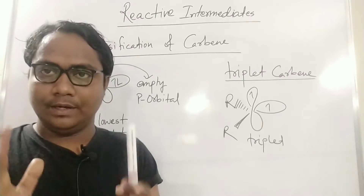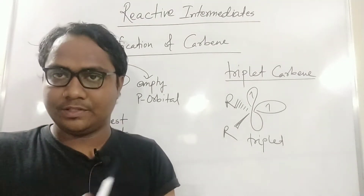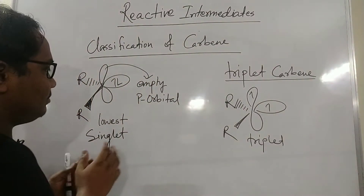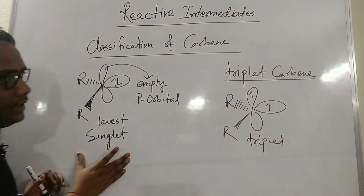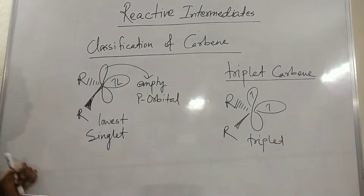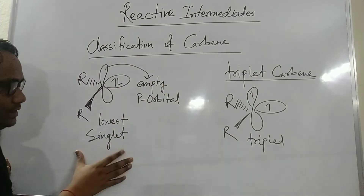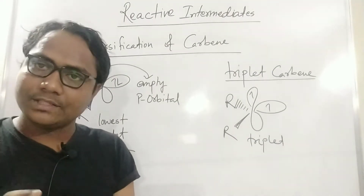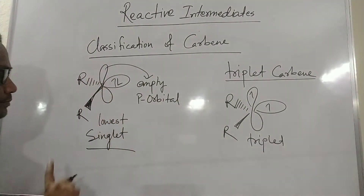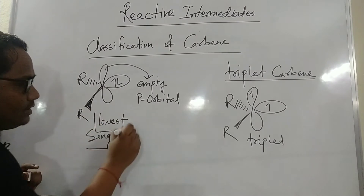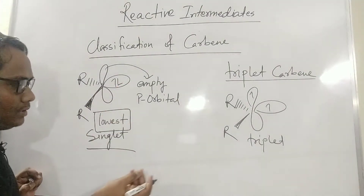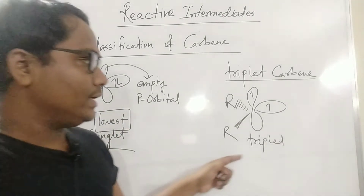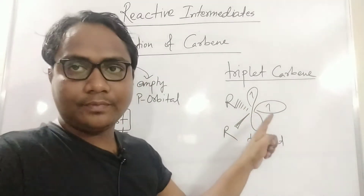In carbene chemistry, there are two types you need to know: singlet carbene and triplet carbene. This is singlet carbene — it is called singlet because the spin is the lowest, giving a spin number of one. Triplet carbene has two unpaired electrons, each in a different orbital, which is why it is called triplet.